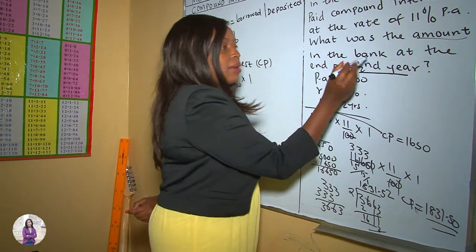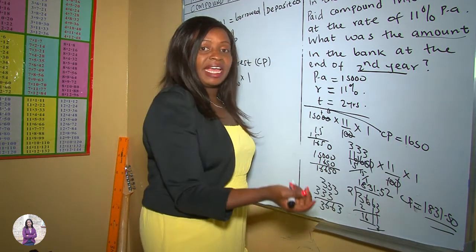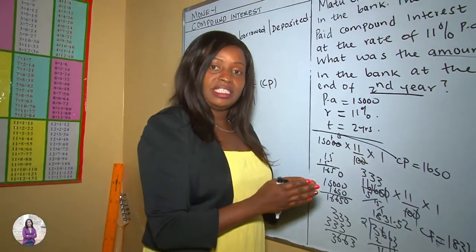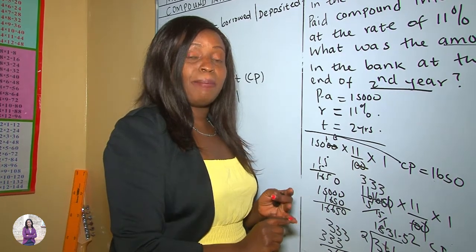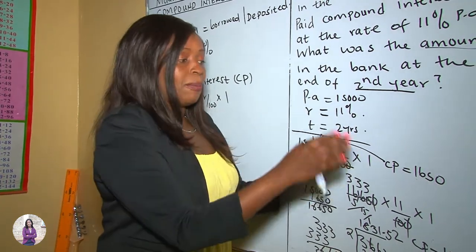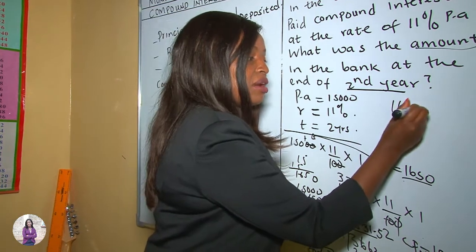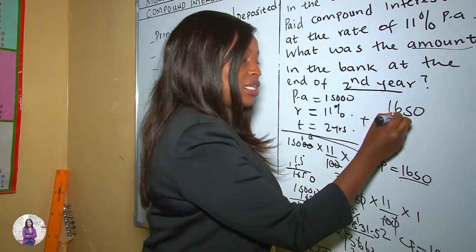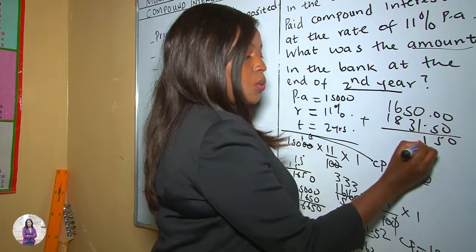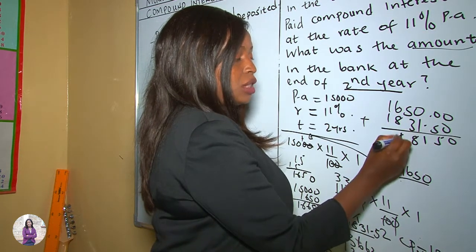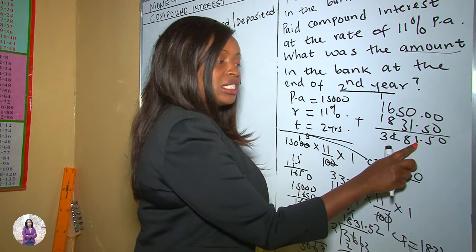The question asks for the total amount in the bank at the end of the second year. This means we need the original deposit plus all compound interest generated. Total compound interest = $1,650 (year 1) + $1,831.50 (year 2) = $3,481.50.